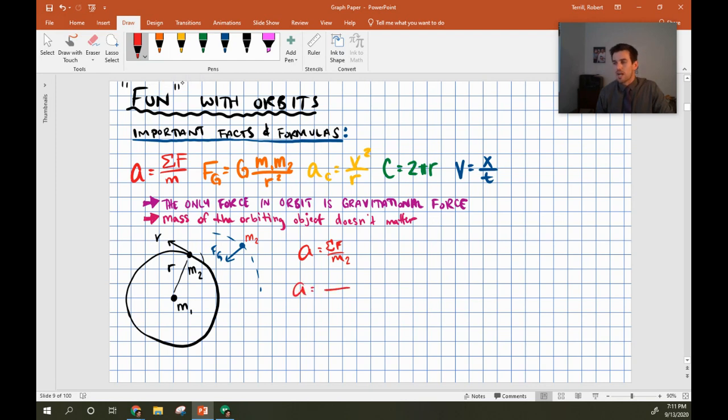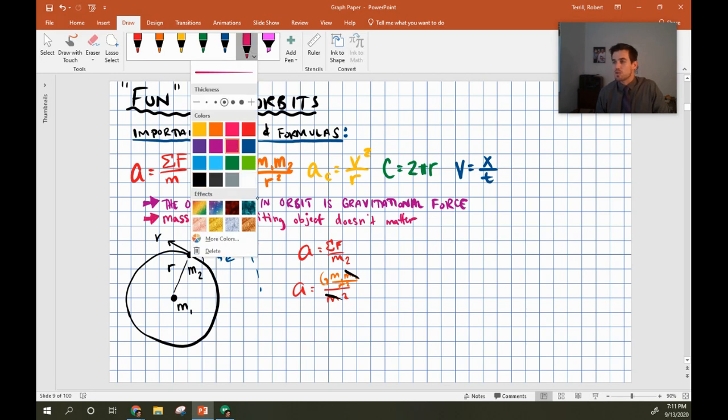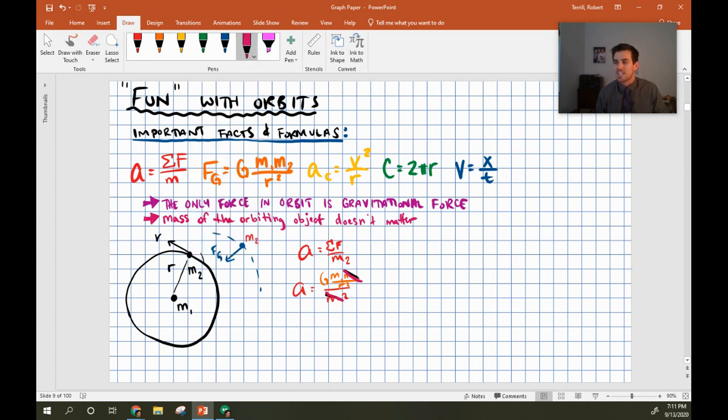Then I can go to my next step and say, well what force is acting on it? It's the force of gravity, so I can pull in the next equation: G m1 m2 all over r squared. That lets me cancel out my m2s because I have m2 in the numerator and m2 in the denominator. That's the mass of the orbiting object—I'm allowed to cancel that.